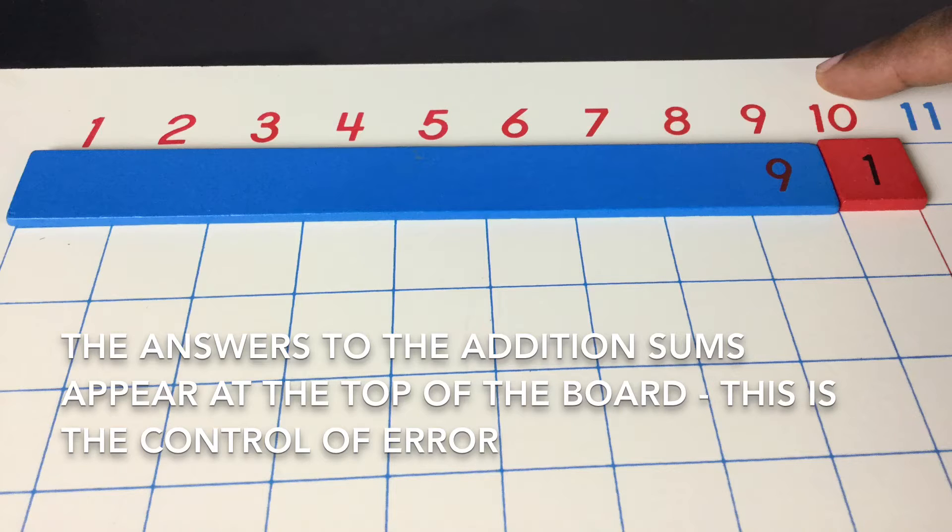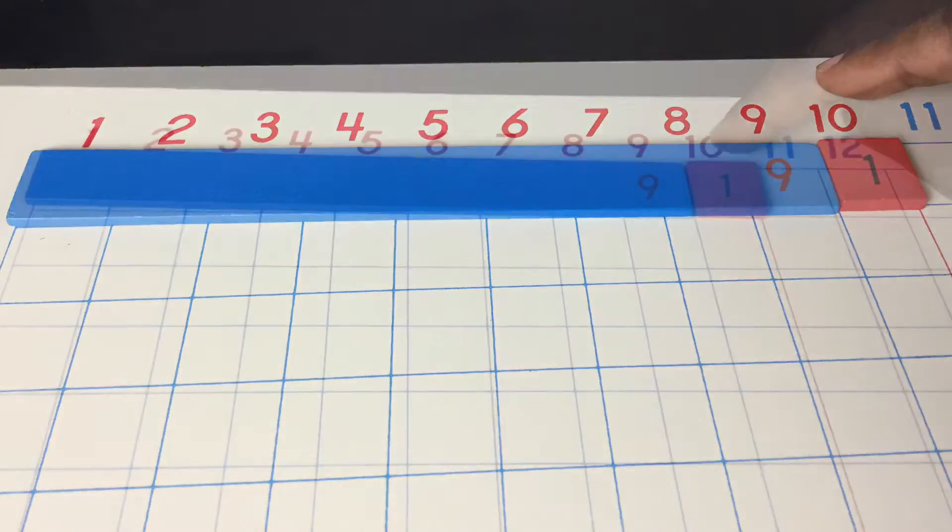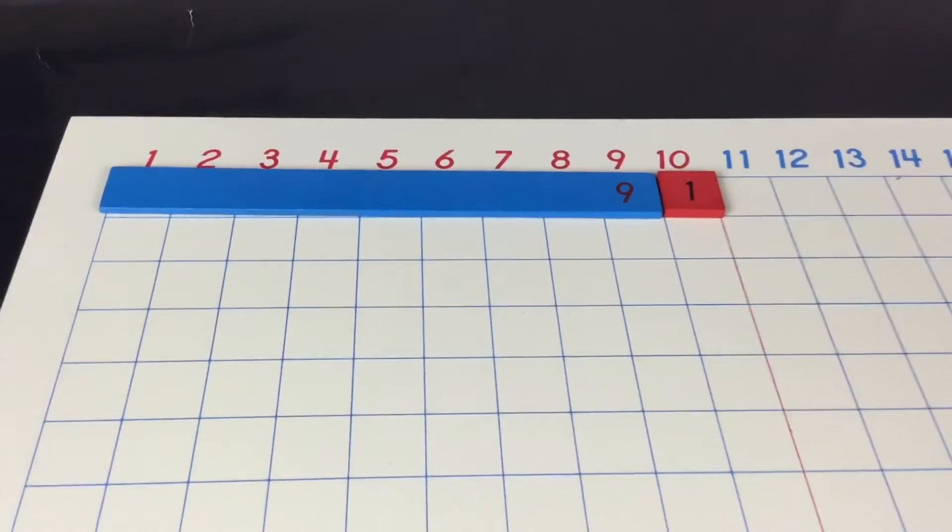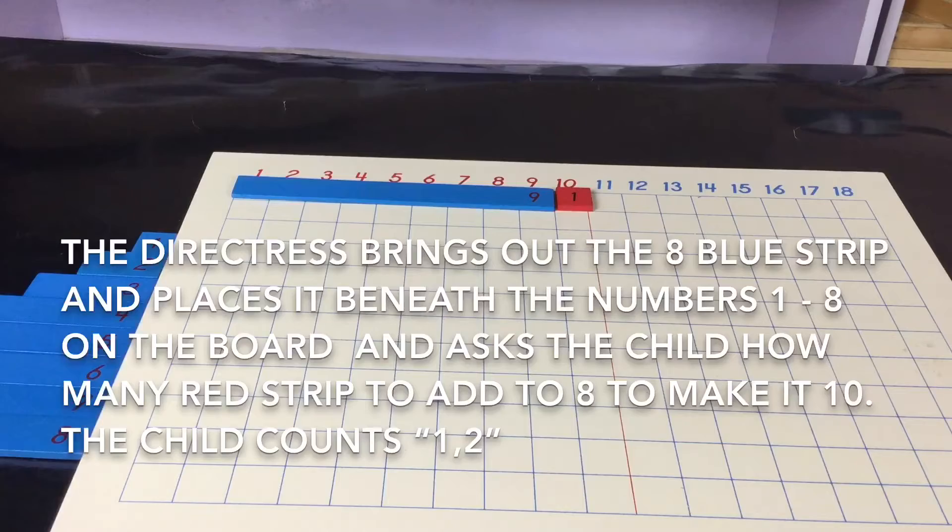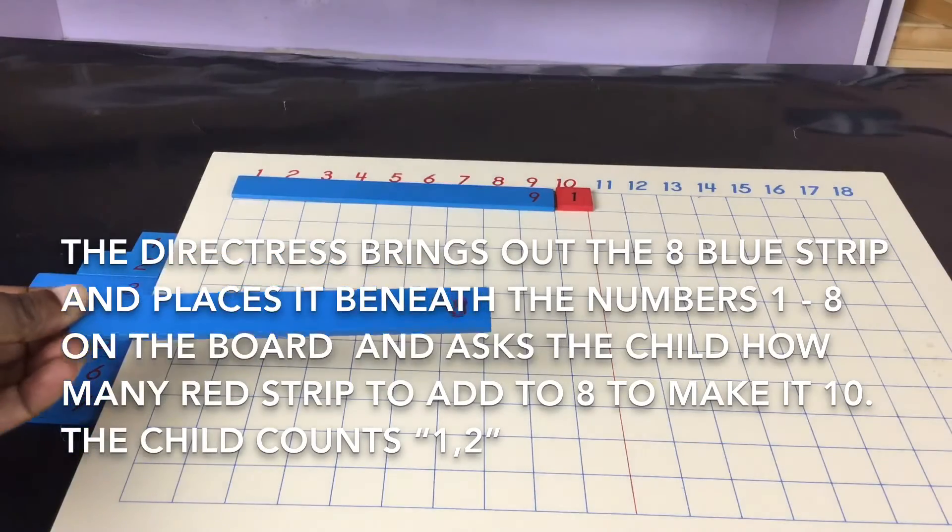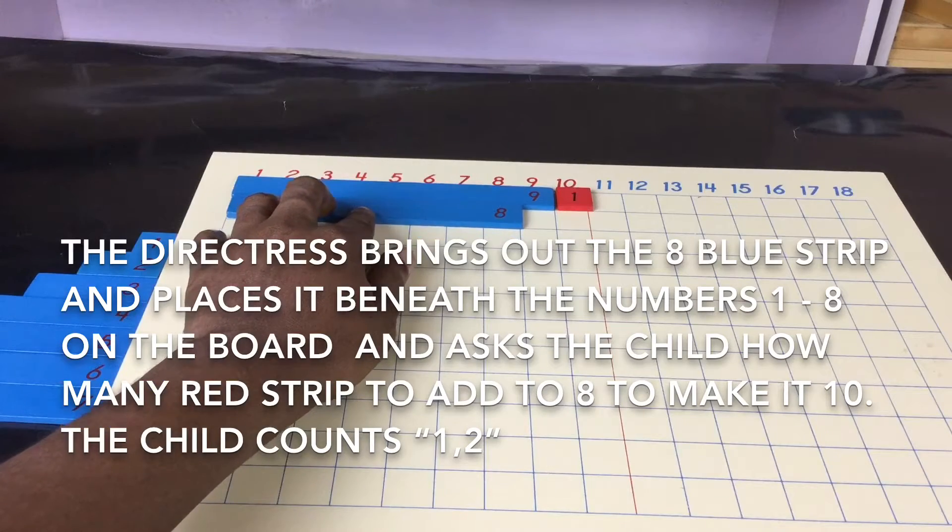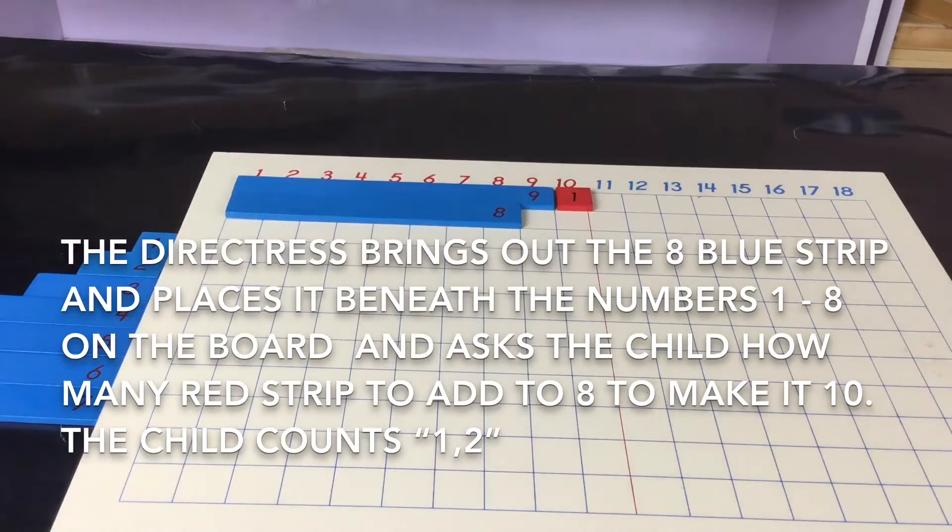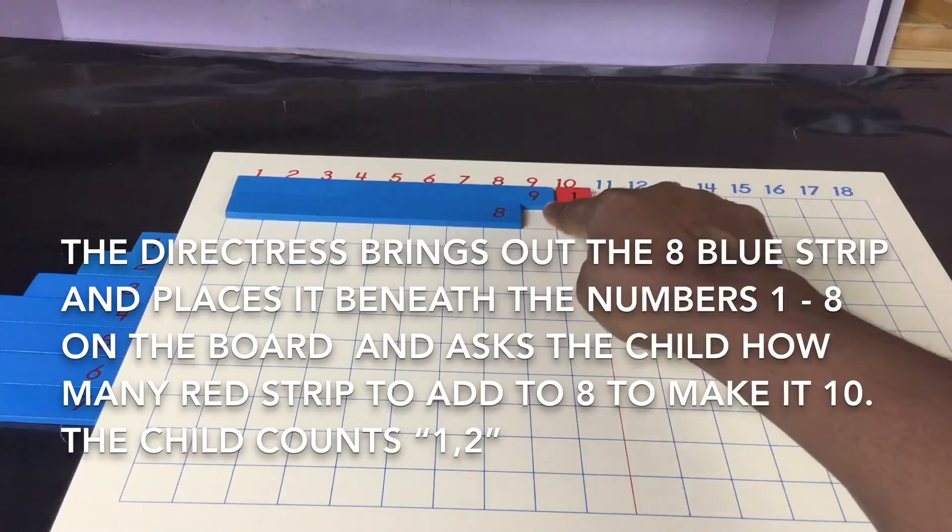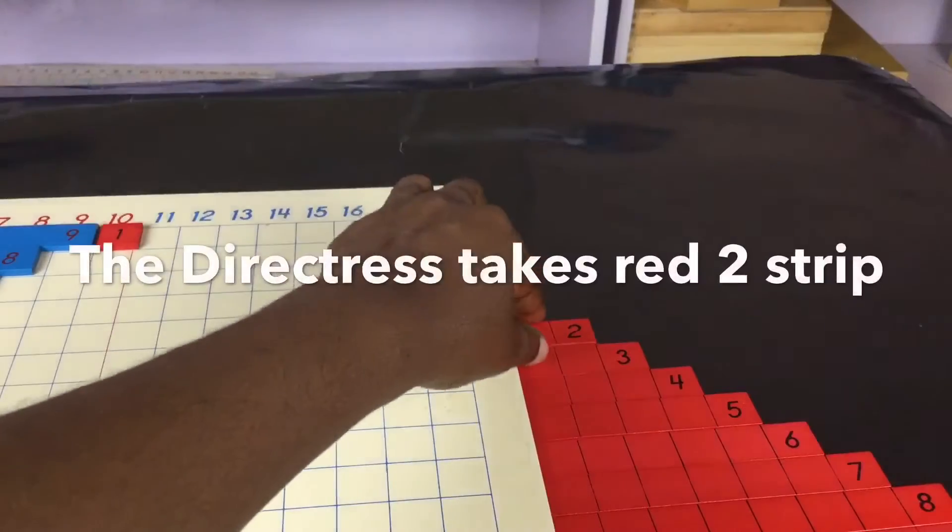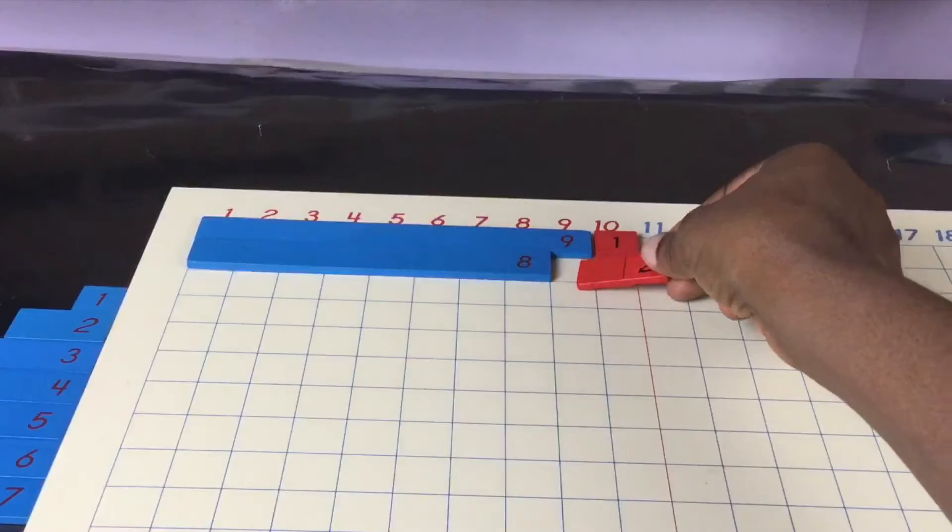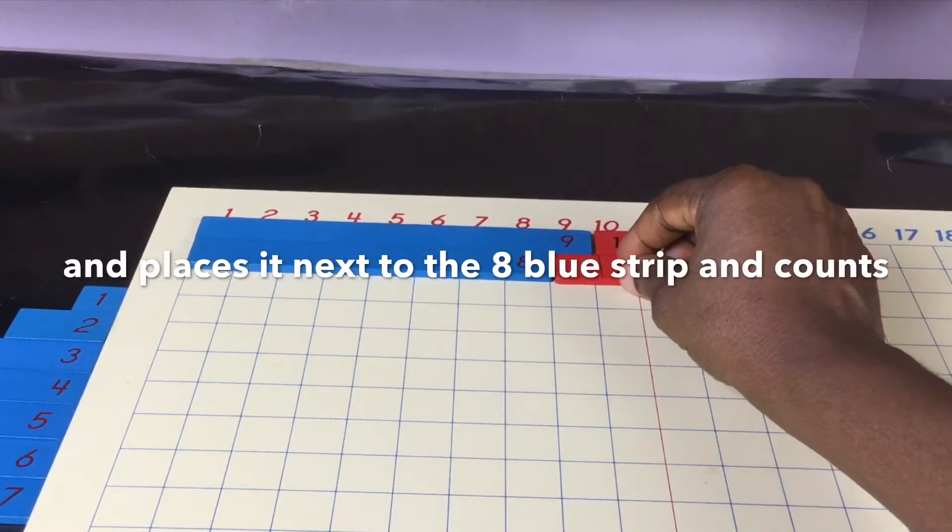The directress brings out the eight blue strip and places it beneath the numbers one to eight on the board and asks the child how many red strips to add to eight to make it ten. The child counts two. The directress takes the red two strip and places it next to the eight blue strip and counts.